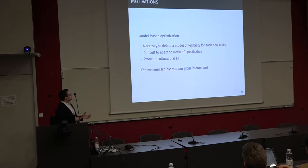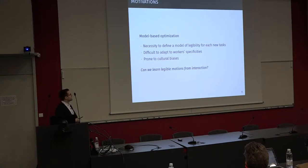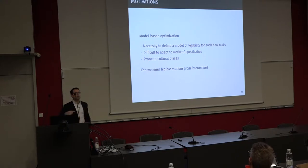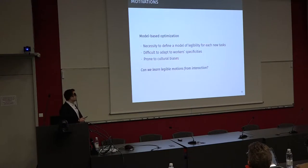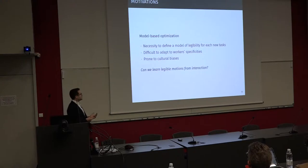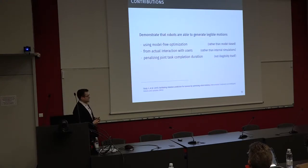The original approach was mostly model-based, defining a probabilistic model of what legible motion is. However, these have some limitations: if you want to change the task, you need to create a new model, which may be difficult. If you want to adapt to worker specificities, you need to incorporate all those specificities into the model, which may not be trivial. Moreover, it can be prone to cultural biases. So the question we asked ourselves is: can we actually learn those legible motions directly from interacting with people? And that is what we did.